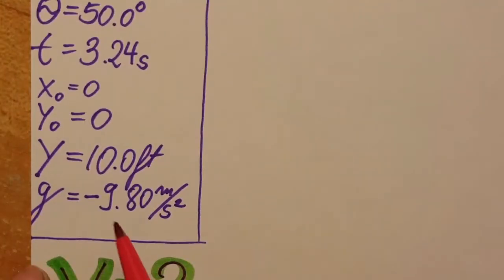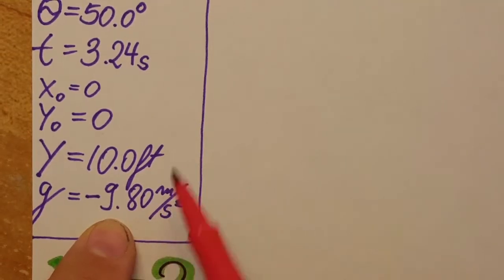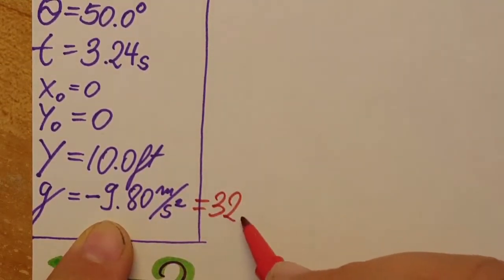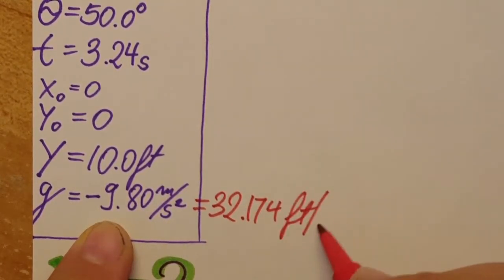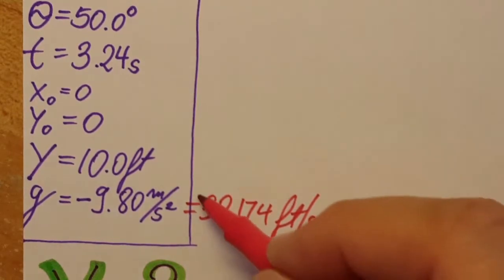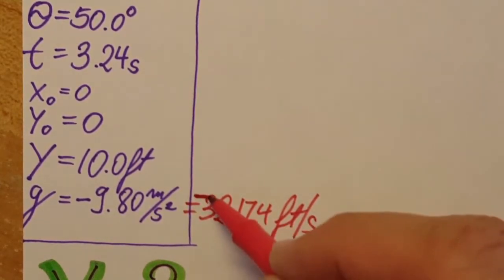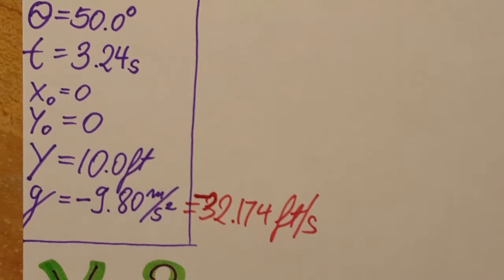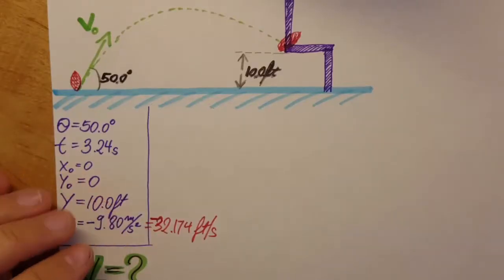Also this problem is in imperial units and 10 feet and they're also asking us to find this V0 in imperial units so for our gravity we're not gonna use 9.8 meters per second but we're gonna use 32.174 feet per second. Negative. Let's not forget the negative.